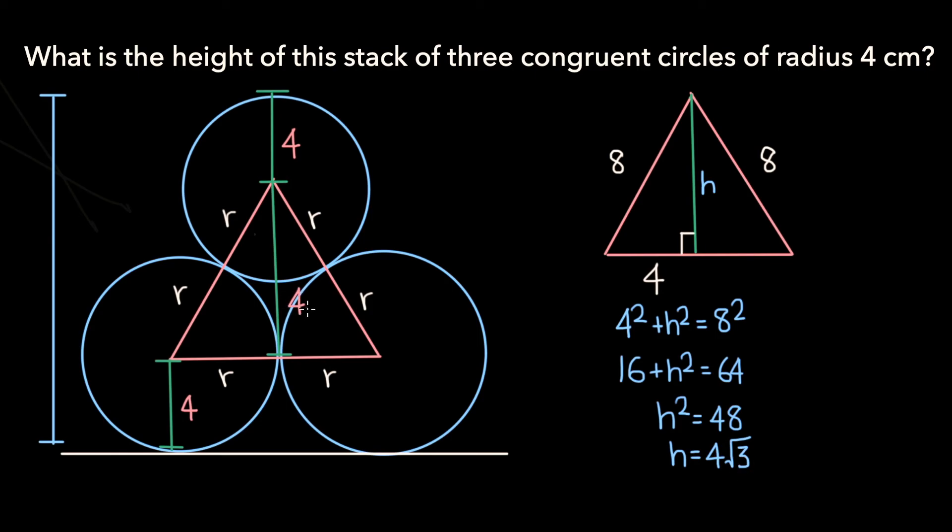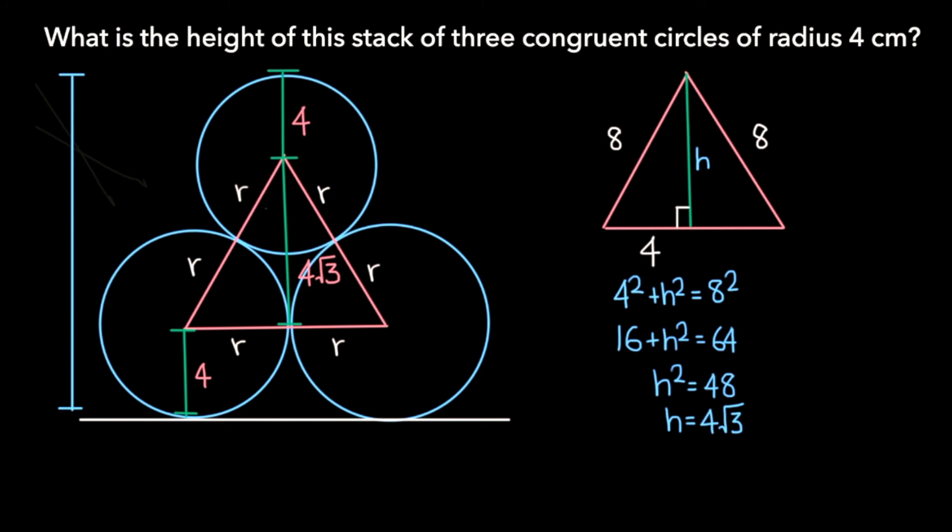The entire height, then, is just the sum of the lengths of the individual components. So 4 plus 4 root 3 plus 4, or 8 plus 4 root 3. And that's all there is to this problem.